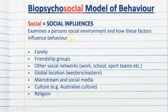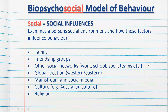The final part of the model is the social influences, which examines a person's social environment and how those factors influence behaviour. While the bio and psycho sections focus on the self, the social section covers anything external to the self. This includes someone's family and family dynamic, their friendship groups, and other social networks such as work groups, school groups, sporting teams, and church groups — all of which influence behaviour within those particular group dynamics.